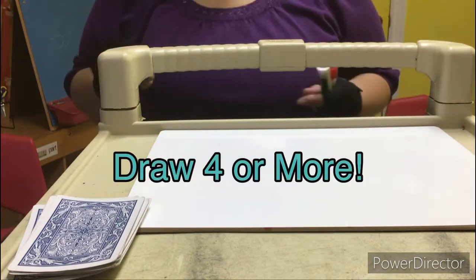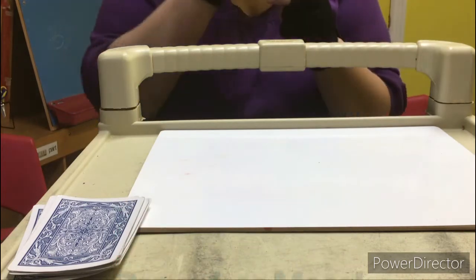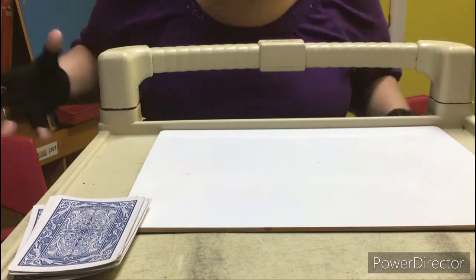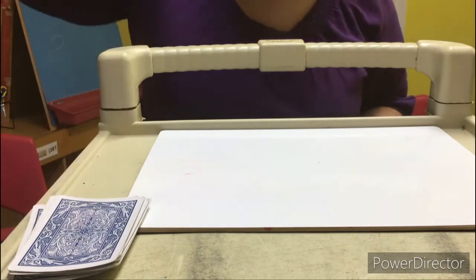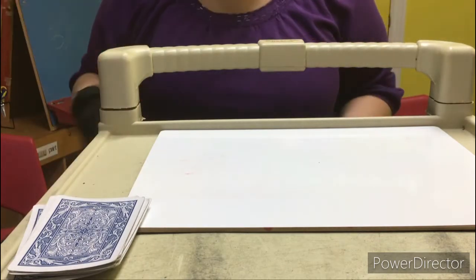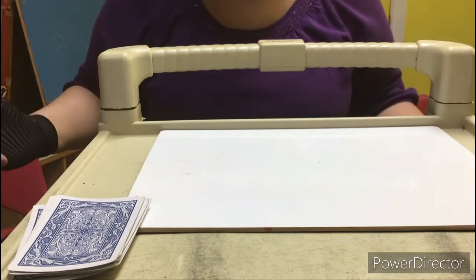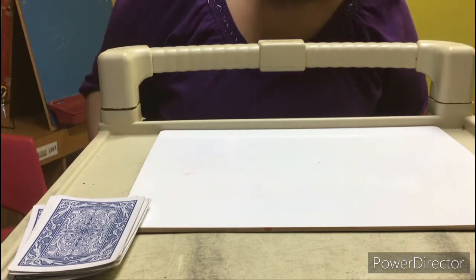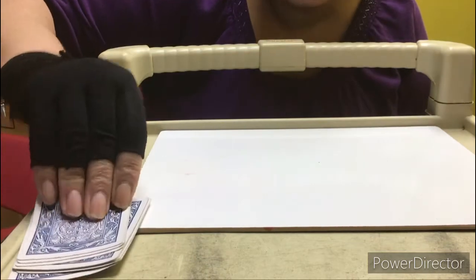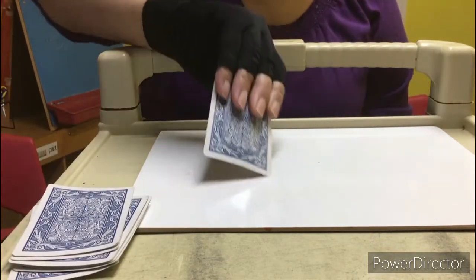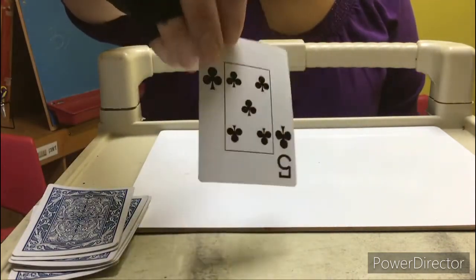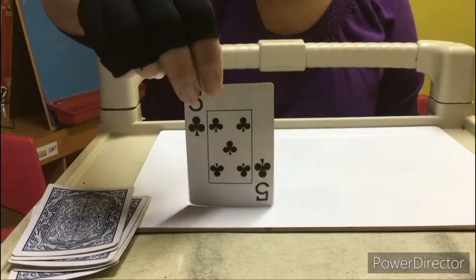So what 'draw' means is we're going to draw pictures and we're also going to be drawing cards out of the pile. I'm going to draw from my card pile first. Drawing means to select the card from the top of your pile and flip it over. What number did I draw?